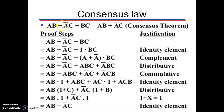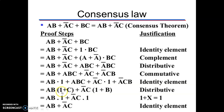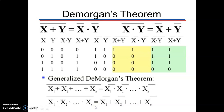Consensus law: a·b + ā·c + b·c = a·b + ā·c. Starting with a·b + ā·c, represent b·c as 1·b·c. Replace 1 with (a + ā): this gives a·b·c + ā·b·c. Combining the first and third terms: a·b + a·b·c = a·b·(1+c) = a·b. Combining the second and fourth terms: ā·c + ā·b·c = ā·c·(1+b) = ā·c. So a·b + ā·c + b·c = a·b + ā·c. That is the consensus theorem.